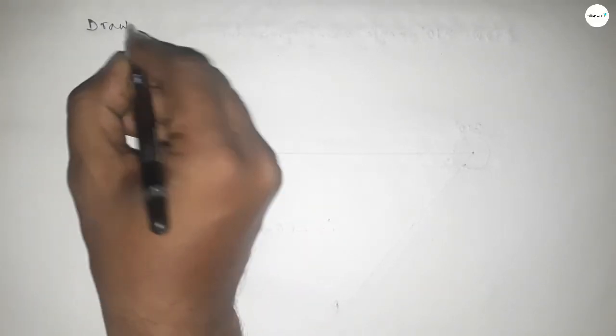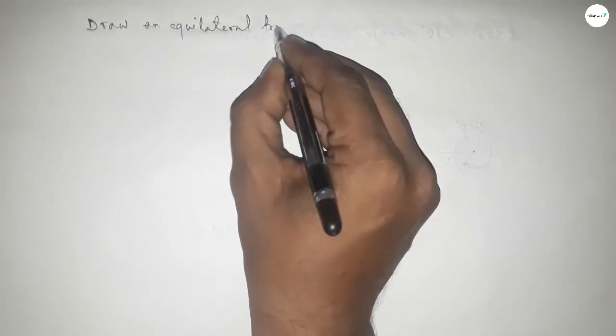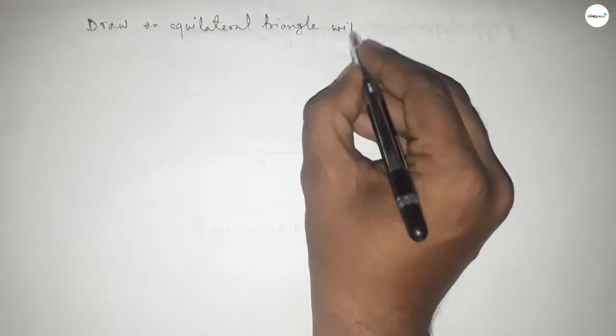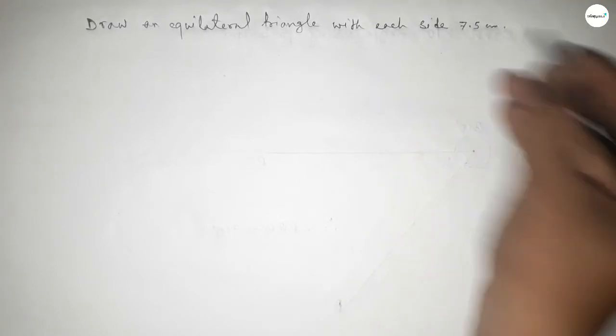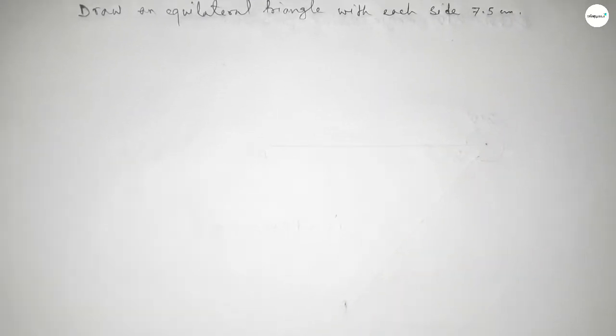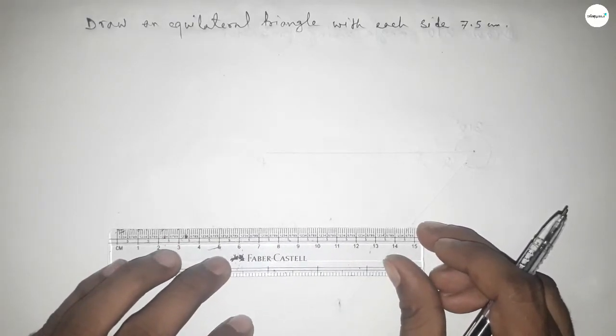Hi everyone, welcome to SS Chair Classes. Today in this video we have to draw an equilateral triangle with each side 7.5 centimeter. So let's start the video. First of all, drawing here a line of length 7.5 centimeter.